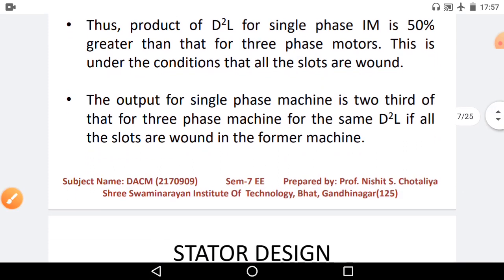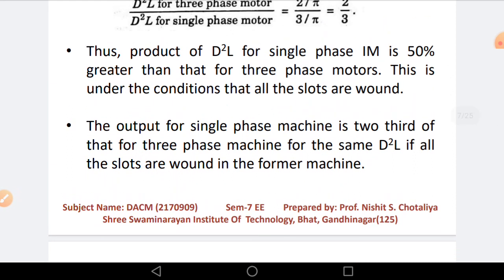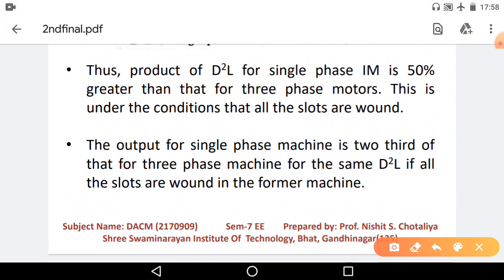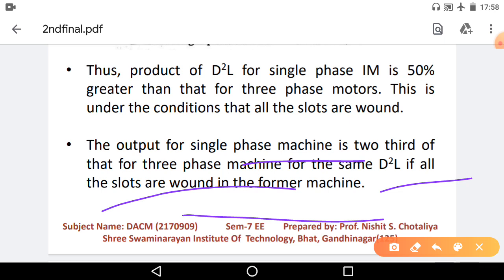Also, the output for single phase machine is two-thirds of that for the three phase machine for the same D²L. This is because the single phase rating is 2/3 of three phase, and irrespective of single phase, the three phase is 3/2 times. Additionally, D²L comparison is valid when all slots are wound with full pitch winding, as that is the condition assumed here. If full pitch winding is not used, then there will be variation in D²L and C0, and consequently in the ratings of both machines.